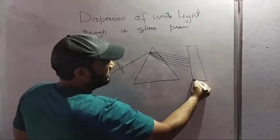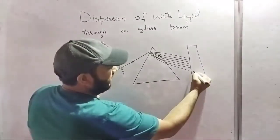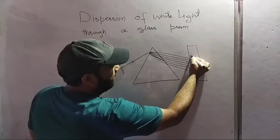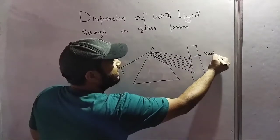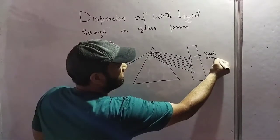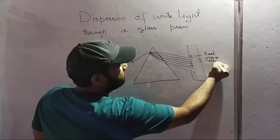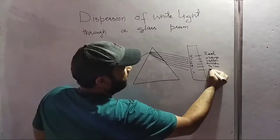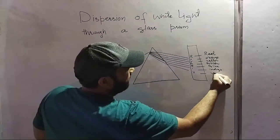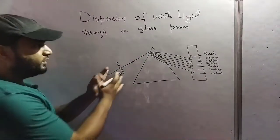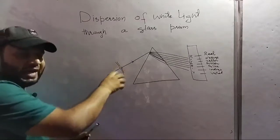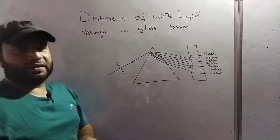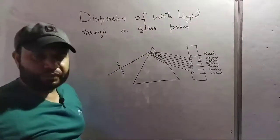On a screen you will obtain seven different colors. Remember the acronym VIBGYOR — violet, indigo, blue, green, yellow, orange, and red. So this phenomenon of splitting white light into its constituent colors is called dispersion of white light.